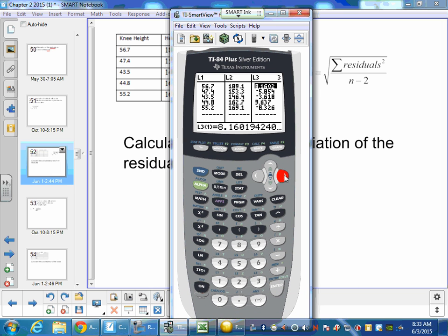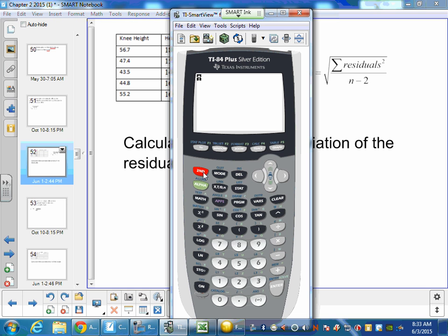But we already have our residuals figured out in L3. So now we just have to take our L3 numbers and square them. And we have that list. So now it tells us we want to sum those up. To sum up a list, we can hit second stat, go over to sum, which is number 5.